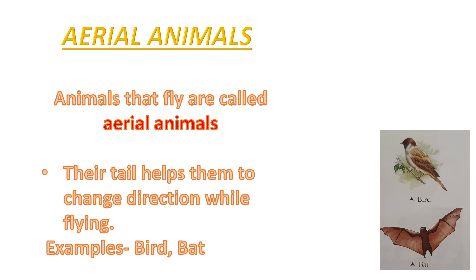Now for the last group — aerial animals. Animals that fly are called aerial animals. Their tail helps them to change direction while flying. Examples include birds. I'd also like to share a fact about the bat.